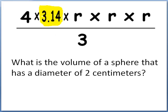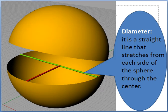Alright, let's take a look at an actual problem, remembering pi is, correct to two decimal places, 3.14. What's the volume of a sphere that has a diameter of 2 centimeters? Well, first...